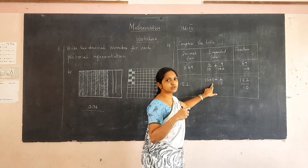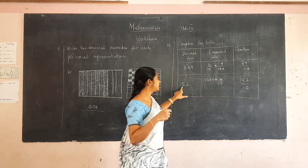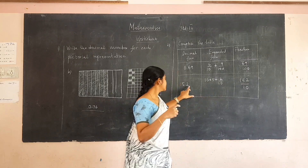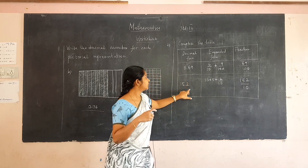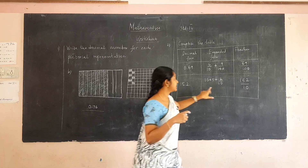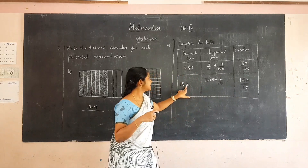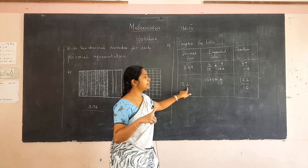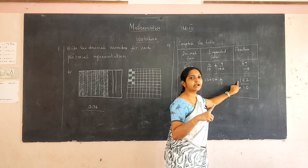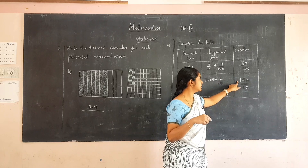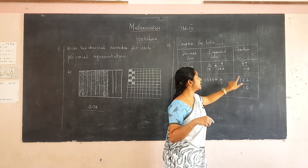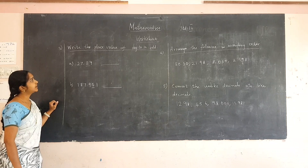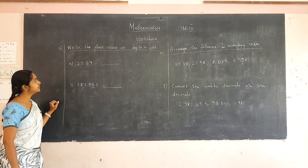Ten plus five represents the whole number, which is fifteen, and at the decimal point it is two by ten, so we put two in the decimal place. After the decimal point we have only one place value, so we divide by ten — it is one hundred and fifty-two by ten. Remember: we should not keep the decimal point in the fraction.